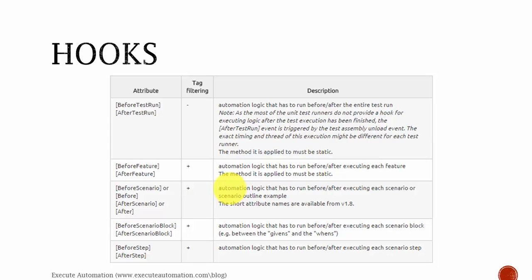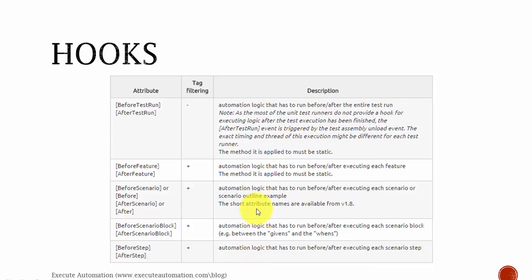These hooks are very helpful when you try to do some kind of environment setup before running the actual test. For example, if you want to open a browser before your test starts, you can use BeforeTestRun. If you want to perform some operation for a particular feature, you can use BeforeFeature. There's also BeforeScenario, BeforeScenarioBlock, and BeforeStep. An important thing to note: the BeforeTestRun and BeforeFeature attributes can only be applied to a static method, whereas BeforeScenario and BeforeScenarioBlock can be applied to a non-static method as well.